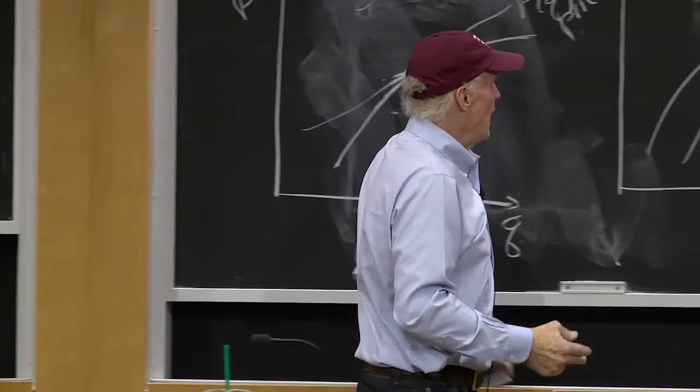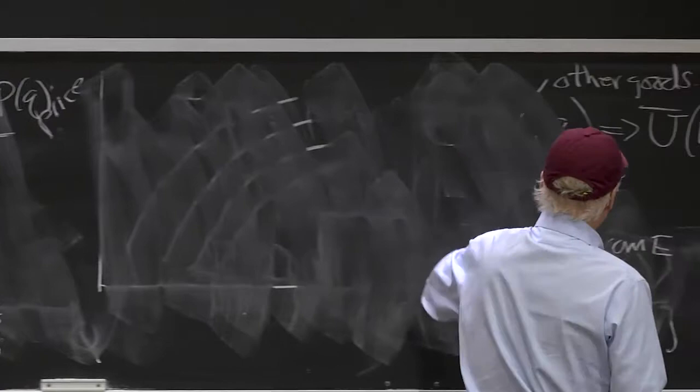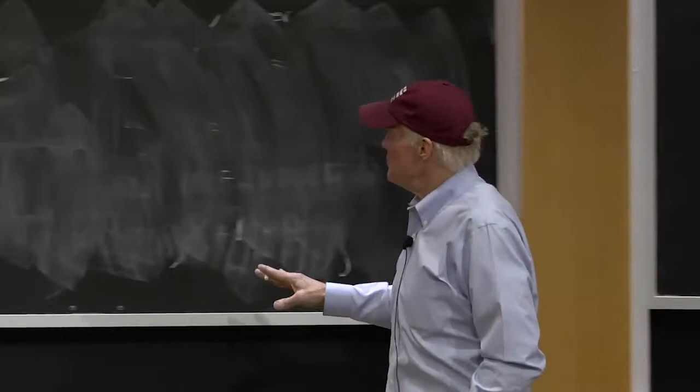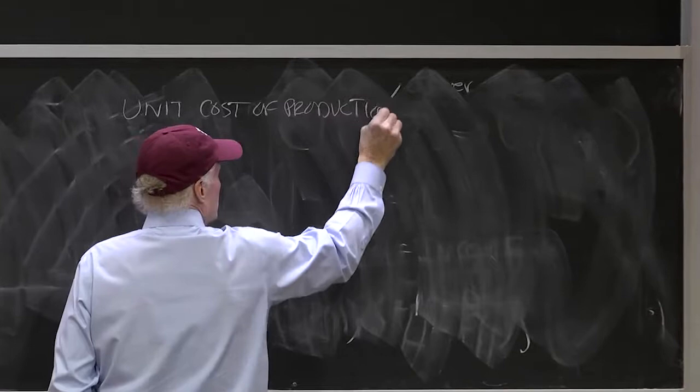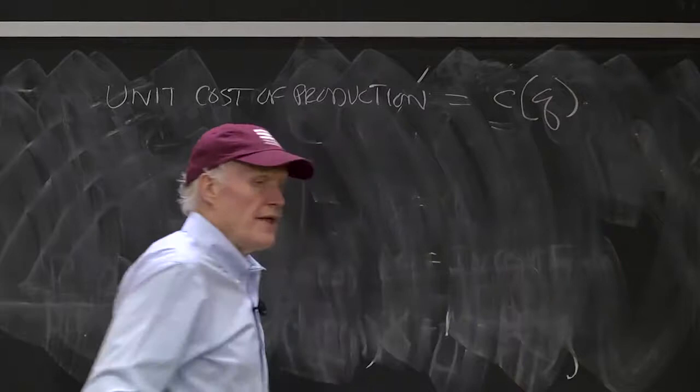Now, let's start thinking about the other side of the market. I'm going to do a real simple model of the other side of the market. I'm going to assume that there are producers on the other side of the market. And there are a large number of producers. And for right now, I'm just going to assume that the unit cost of production equals C of Q.